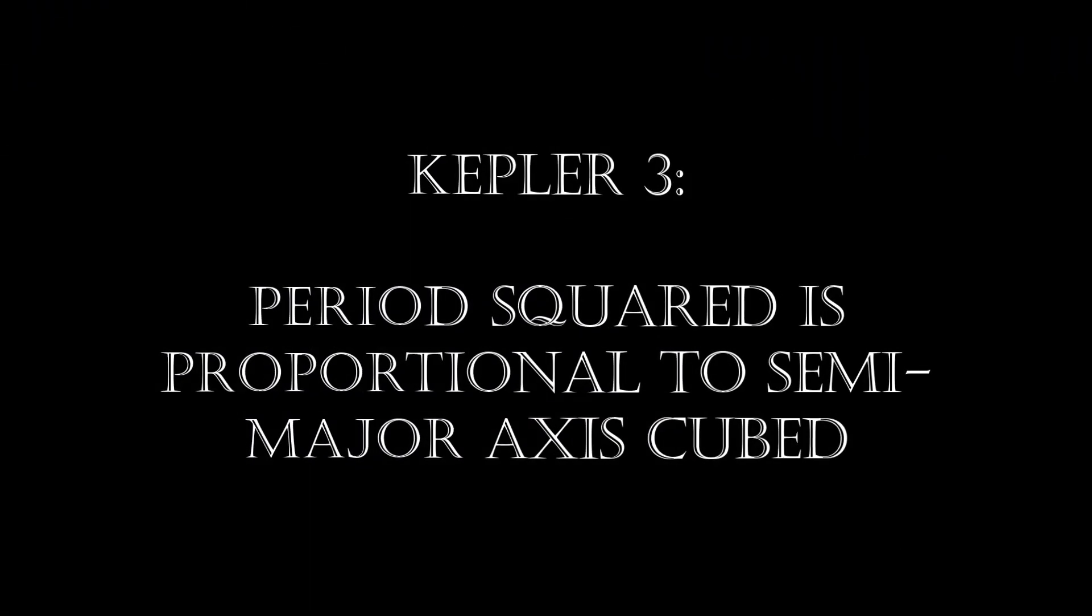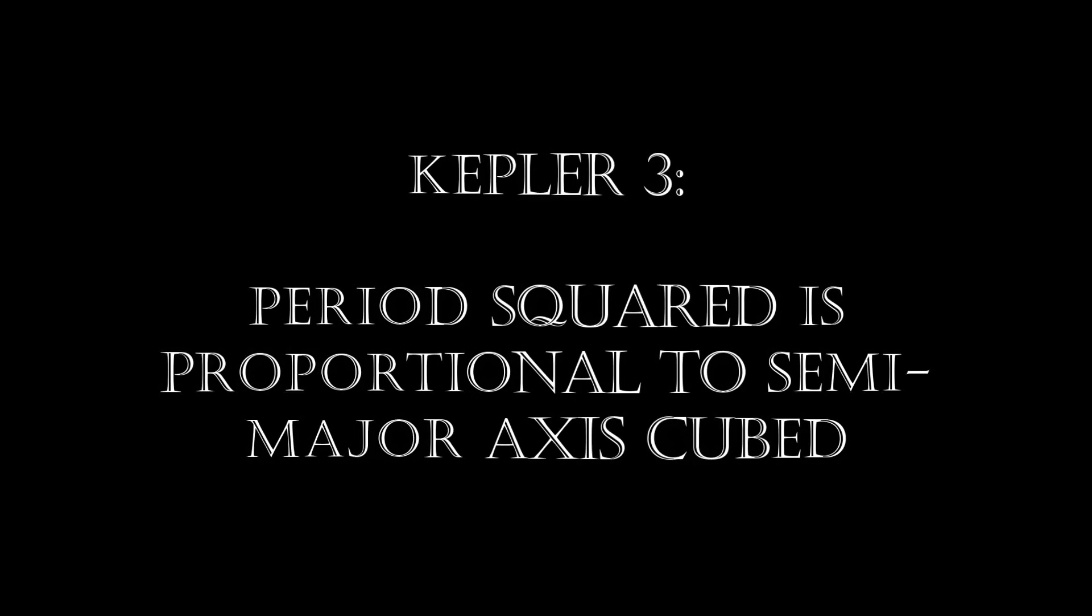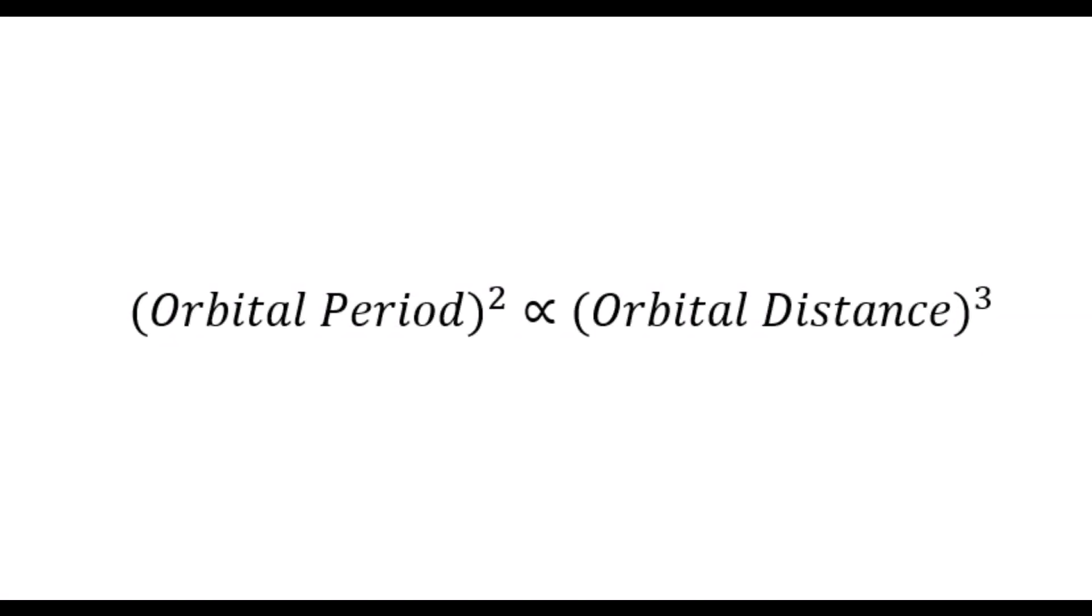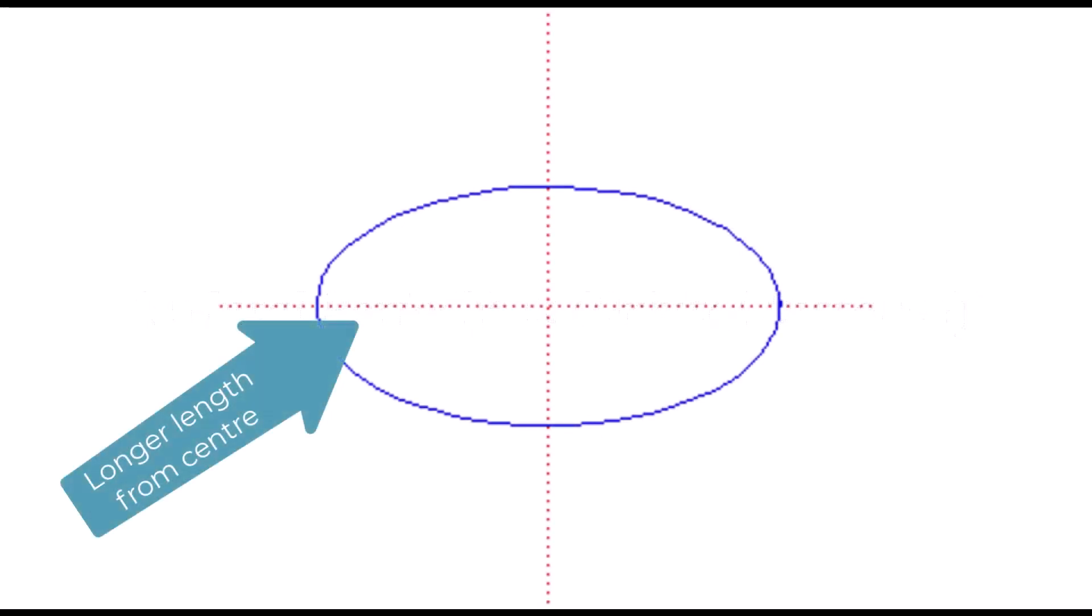Lastly, Kepler's third law relates a planet's orbital period, which is the time it takes for it to complete a full orbital rotation around the sun, to its distance from the sun. That is, the orbital period squared is proportional to the cube of the semi-major axis of the orbit. Remember, the semi-major axis is the longer length when I discussed elliptical geometry earlier.